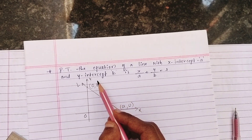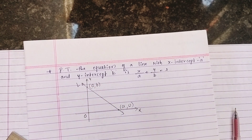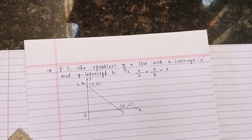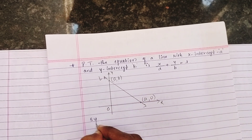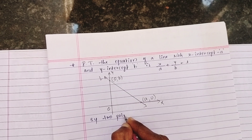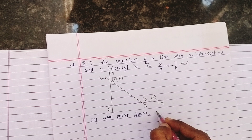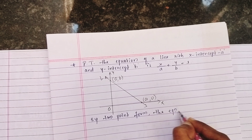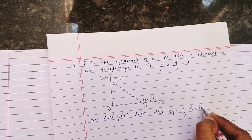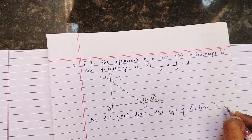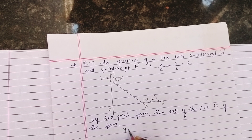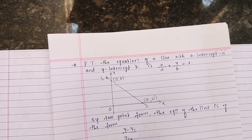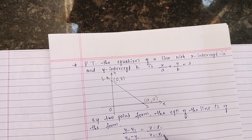Since x-intercept is 'a', the line passes through (a, 0), and since y-intercept is 'b', the line passes through (0, b). By the two-point form, we will use the formula: (y - y1) / (y2 - y1) = (x - x1) / (x2 - x1). This is the formula of the two-point form.